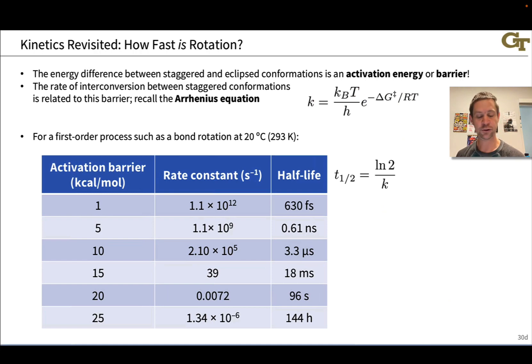And if we do that and we think of this as a first order process, because for a conformational change it pretty much is, only one molecule is involved, right? We can calculate the rate constant and the half-life for rotation based on the activation barrier. And this table gives you a sense of that in kilocalories per mole. So one kilocalorie per mole, very small. The half-life is on the order of femtoseconds, 10 to the negative 12.